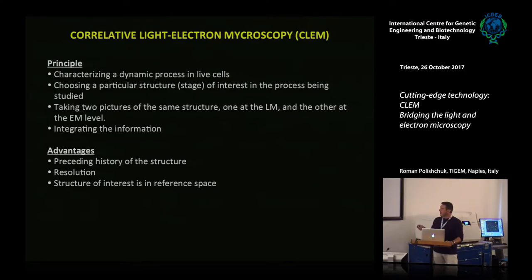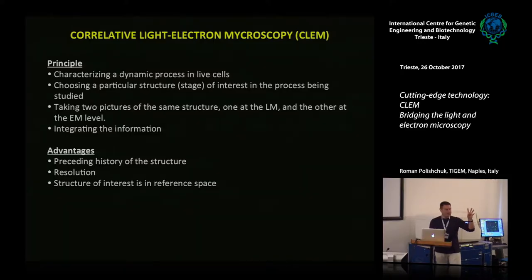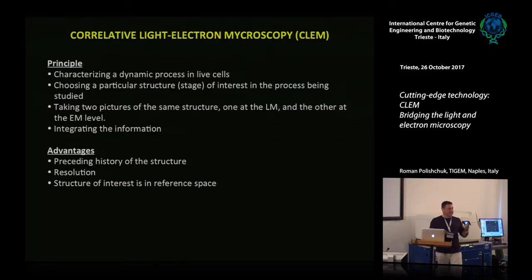Finally, the structure of interest can be visualized in the context of the whole cell. When you look in the light microscope, you see only fluorescent spots — five or six fluorochromes — but they don't show the entire complexity of the cell. They don't reveal all organelles or structures that electron microscopy can visualize, and in certain cases this contextual information is really important.